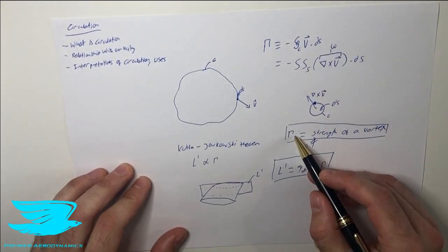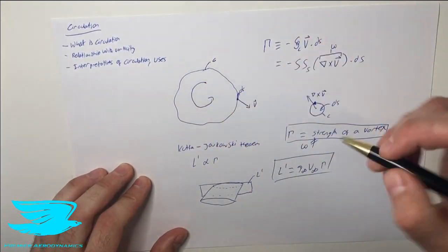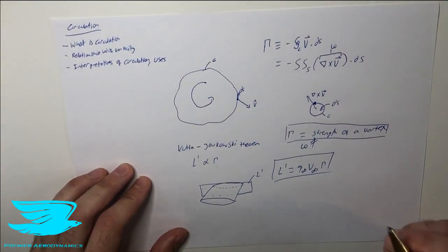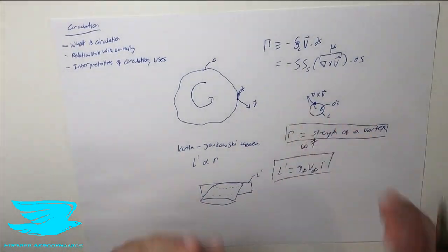And these relate to a couple important things in aerodynamics and fluid mechanics in general. First of all, if we calculate the circulation over a vortex, we calculate the circulation around this vortex, this gives us the strength of the vortex.